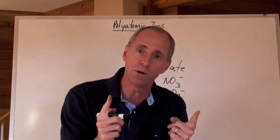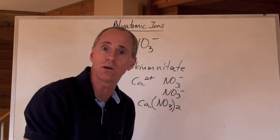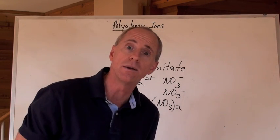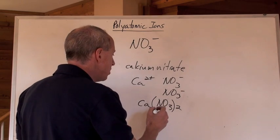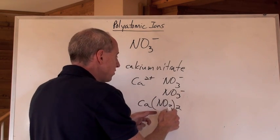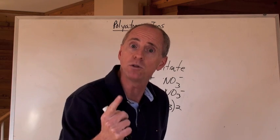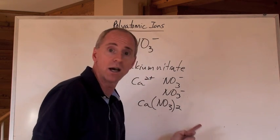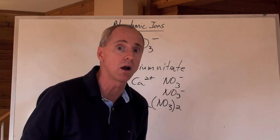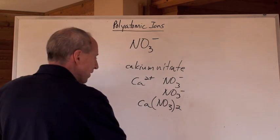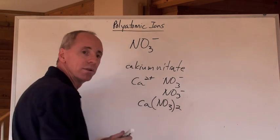And you only put brackets around a polyatomic ion when you have a number outside that is more than one. Couldn't you just put brackets anywhere and just put a one or just leave it alone? Then don't put brackets around it. It is absolutely wrong to put brackets around something and then put a one outside. Don't do it. It's actually wrong. So now look. Calcium nitrate is this formula right here.